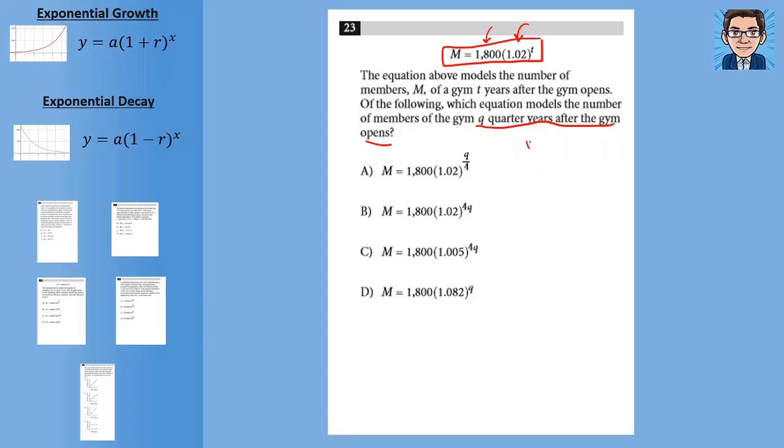Well, all we need to use is use this same equation, but convert quarters to years. So like if we had 12 quarters, for example, that would be 3 years. All we need to do is take the quarters and divide by 4 to get years. So all we need to do is replace t, which is the number of years, by quarters divided by 4. And you get answer A.